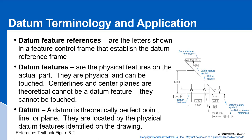A datum is a theoretically perfect point, line, or plane. They are located by the physical datum features that are identified on the drawing. A datum is what's identified on the drawing. A datum feature is the actual corresponding feature on an actual part — it can be touched. And datum feature references are the letters that show up in the feature control frame to reference a datum.